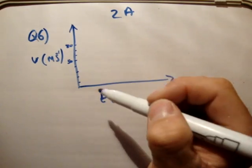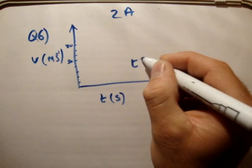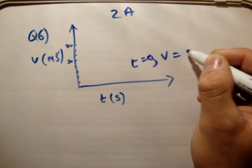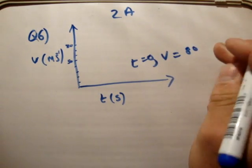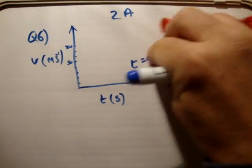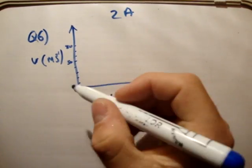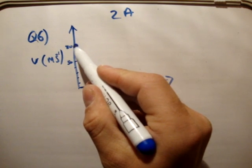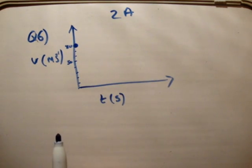So at time t equals 0, your speed is equal to 80. So we'll just sketch that, where at t equals 0, it's at the origin. That means there's t equals 0 and v, or speed, is equal to 80.